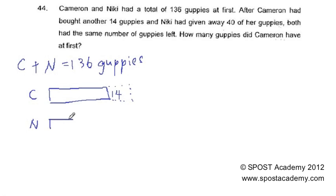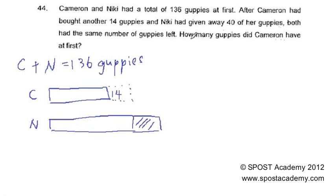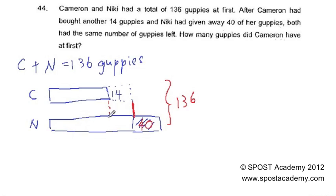Which means that Nicky should have this amount here. And the 40 guppies that she gave away — this is the gave away part, and this is 40. They end up with the same number of guppies. So at first they should have a total of 136. So looking at this, I can cut this as well. This would be 14.